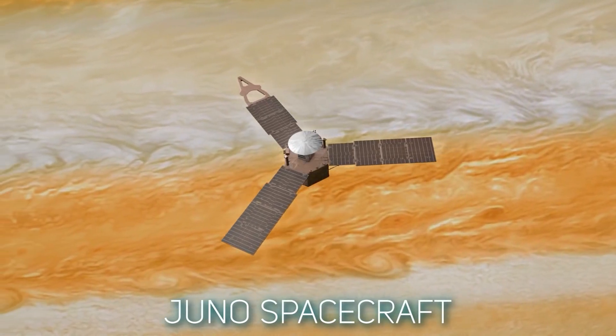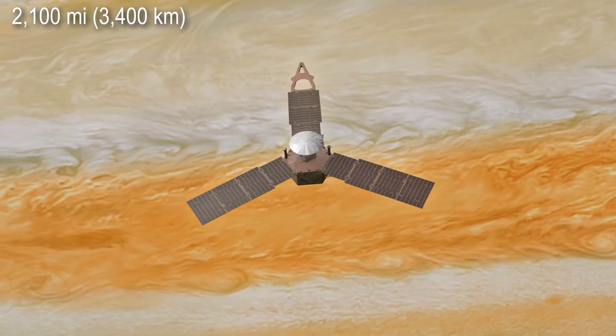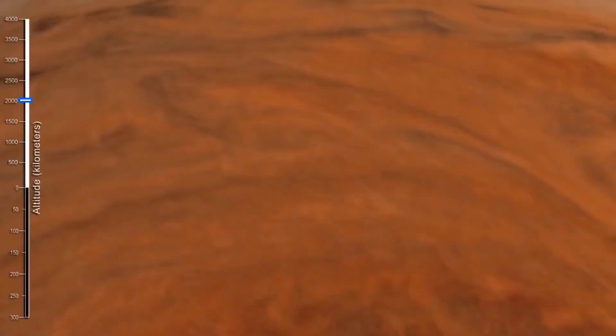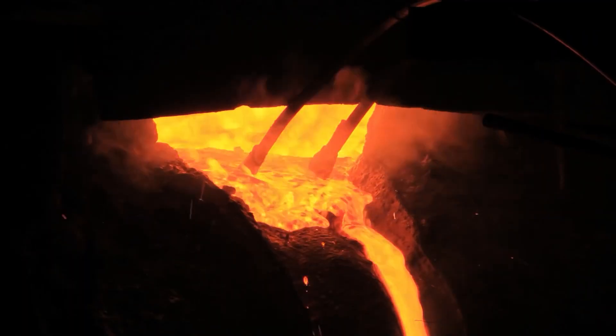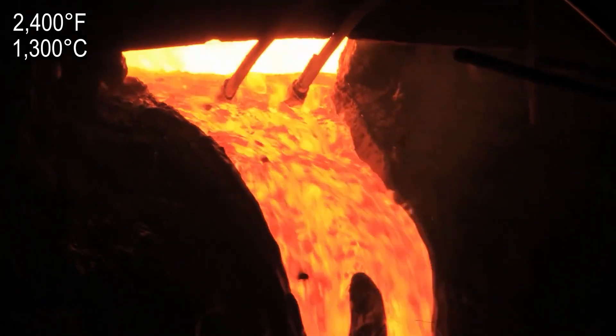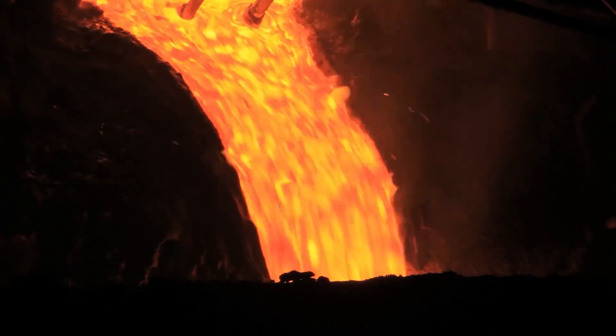NASA's Juno spacecraft comes within 2,100 miles of Jupiter's murky surface, which is plenty close enough. And at 2,400 degrees Fahrenheit, it's enough to melt some iron.